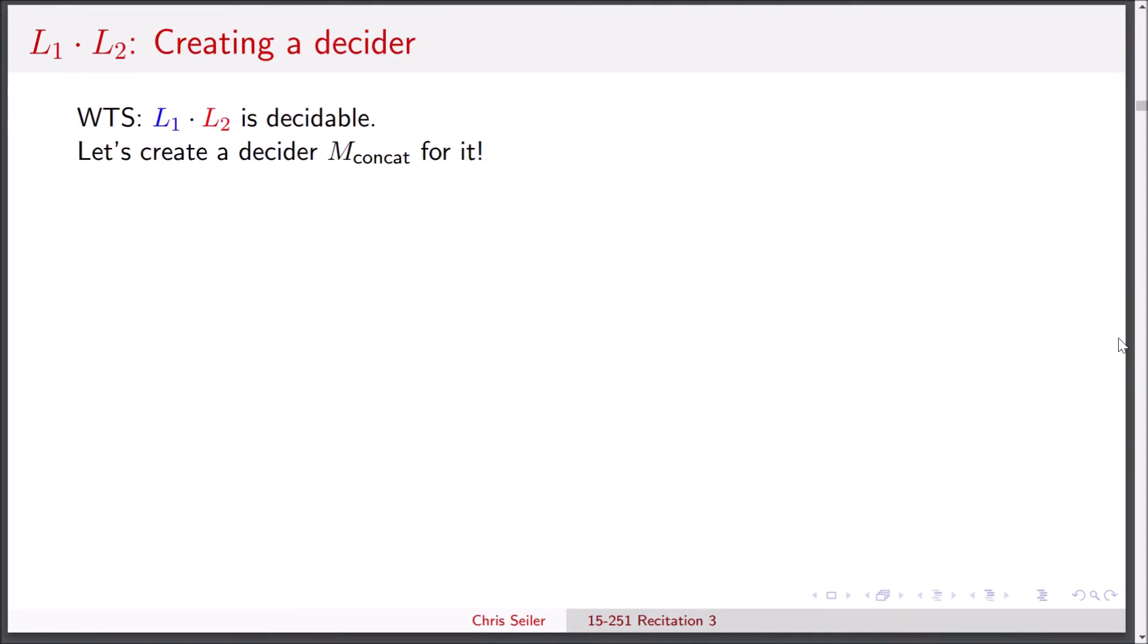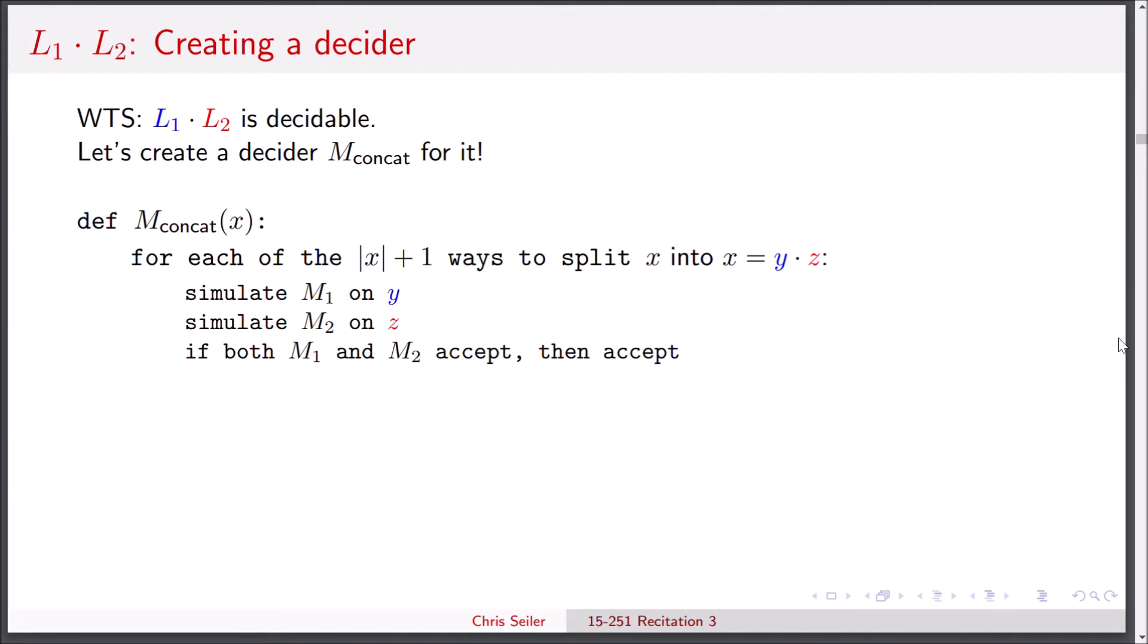Let's create the decider called M concatenate. We're going to take in a string x and do exactly what we said. Consider all of the length of x plus one ways to split x into x equals y concatenate z. We're going to run M1 on y, run M2 on z. If both of them accept, then we're going to accept and otherwise if none of these splits work, we're going to reject.